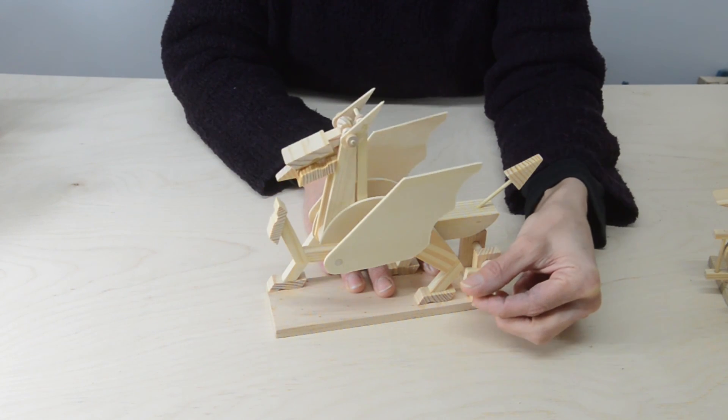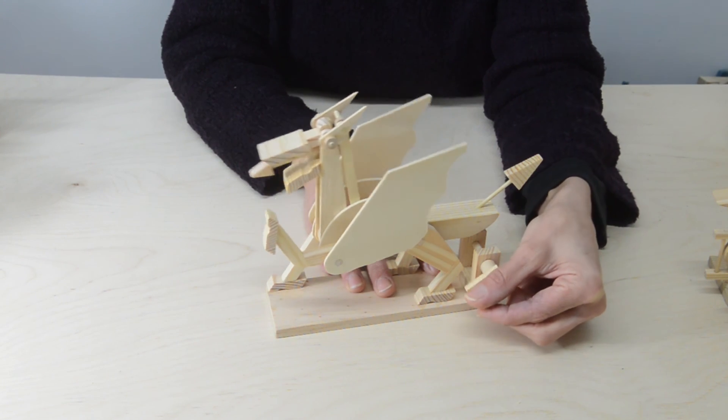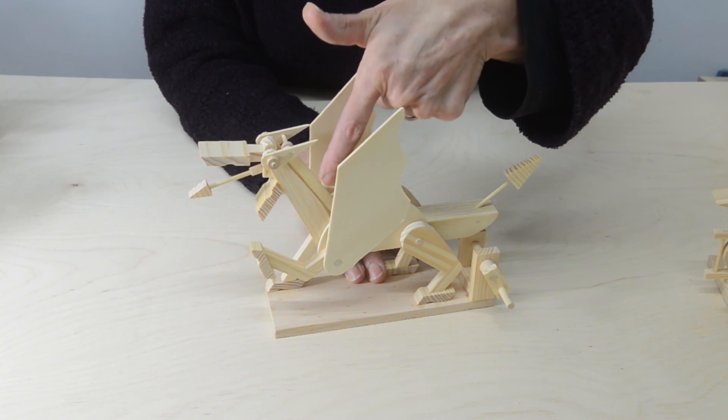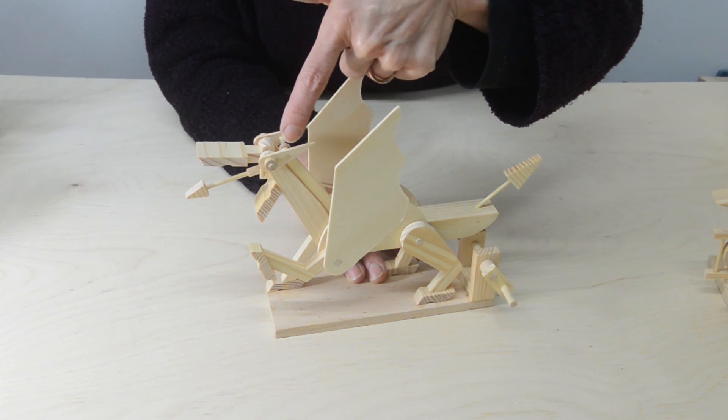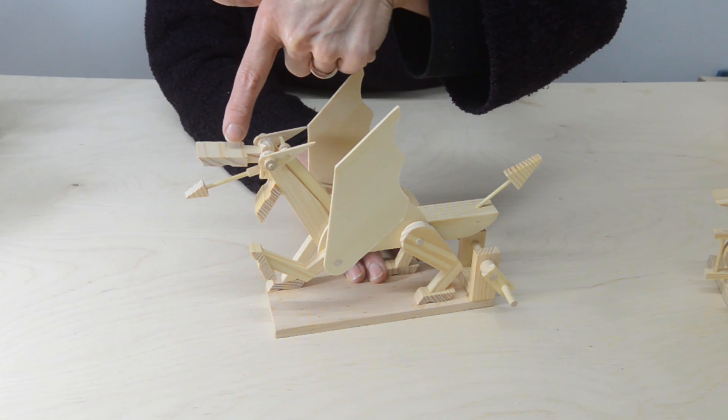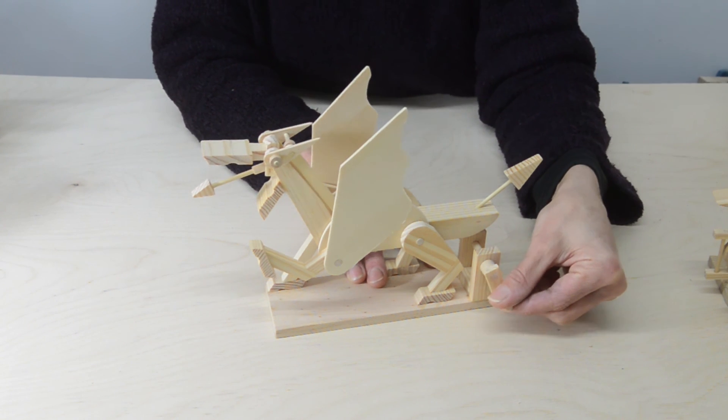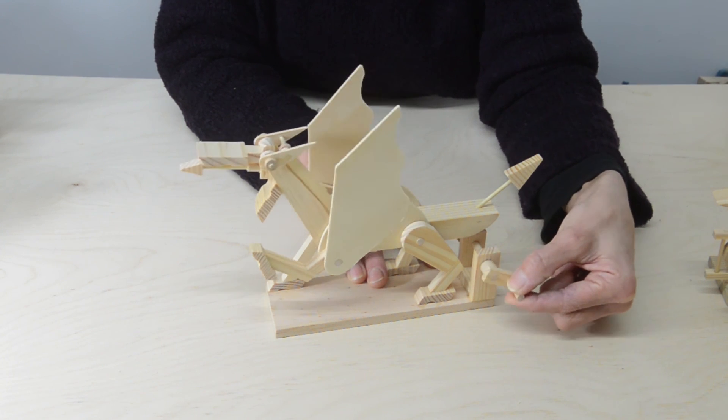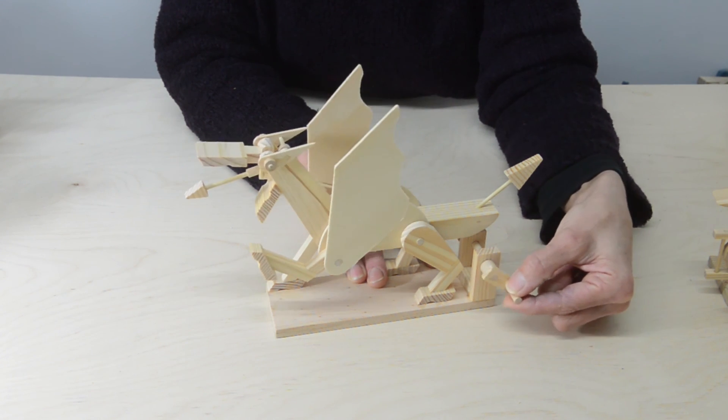Now the dragon has his linkages all connected in his neck. This linkage here is connected to his ears, which are also connected to the top of his mouth. So as the neck pushes backwards and forwards, it pulls the top of his mouth open and shut.